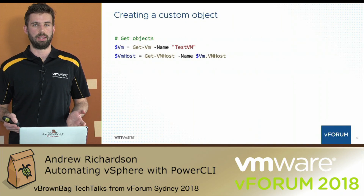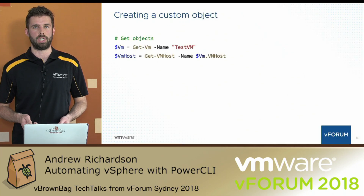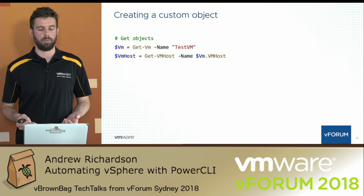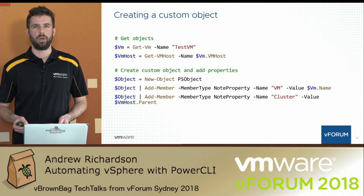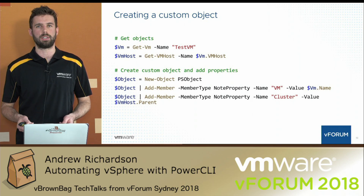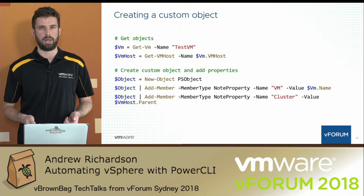Let's have a look at creating a custom object. First we get our VMs — in this case one specific VM called testvm — and we put that into a variable. Then we get a VM host, using the virtual machine's VMHost property to select the ESXi host that the virtual machine is running on, and we put that into a variable as well. After that we create our custom object using the New-Object cmdlet and add our custom properties. We've got a custom property called VM and a custom property called Cluster, and the values of those properties come from our two objects above.